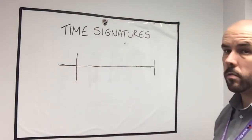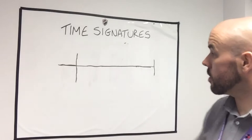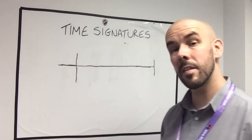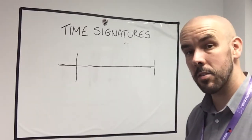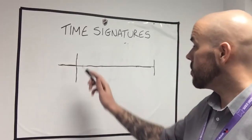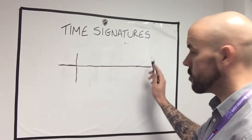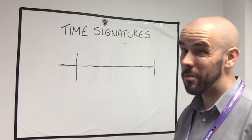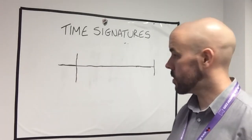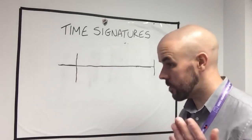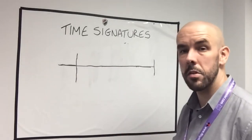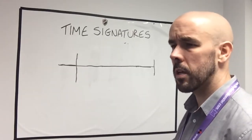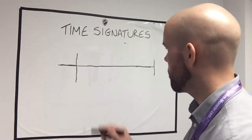So we've done 2-4 and 3-4. You can also do 4-4, which would be the exact same again — four crotchet beats per bar. You can also do 5-4. So we've kind of dealt with simple time signatures. Let's look at some compound time signatures.